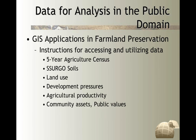All the data I showed is in the public domain: the five-year agricultural census, which we can download as tables and load into GIS maps; SSURGO soils from the Natural Resources Conservation Service; land-use data from county parcel data sets, updated by transaction by the tax assessor. Development pressures, agricultural productivity, community assets, public values — all the data sets you're going to see here were already in the public domain. I did not need to create them from scratch, though in many instances I had to massage and manipulate them.